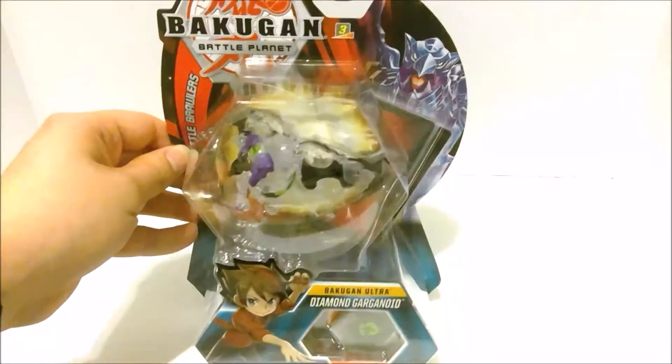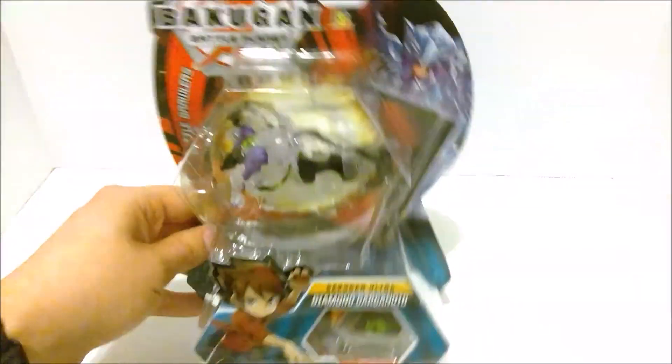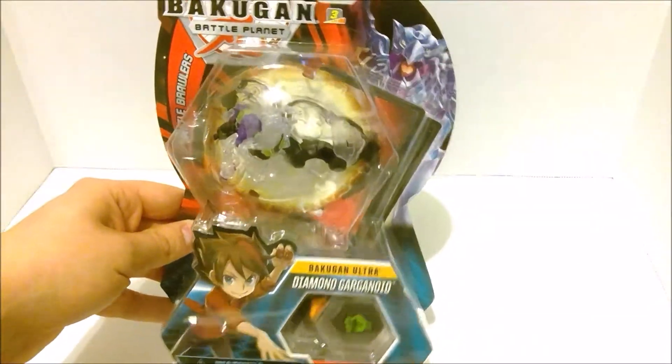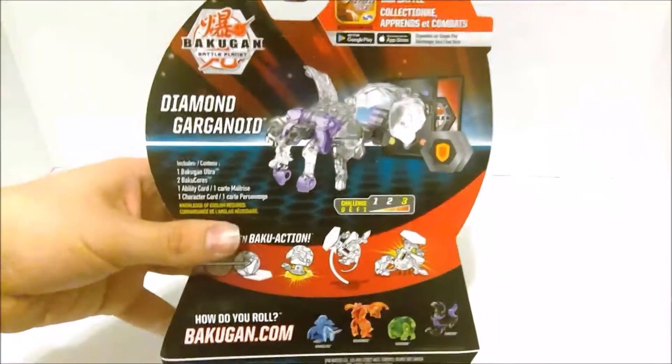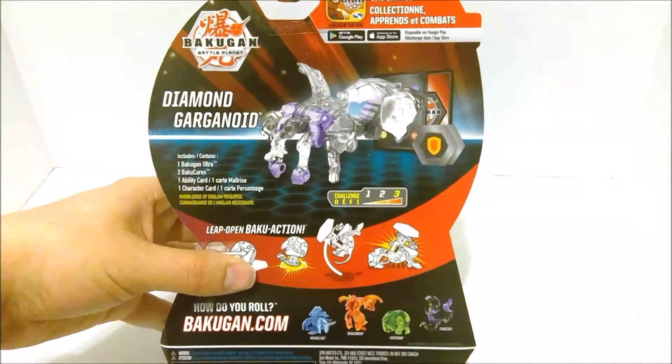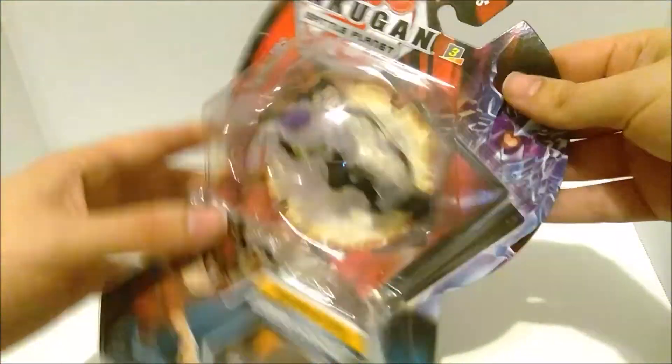This is an old figure. This isn't anything new. This isn't a re-release or anything. This is from months ago. I just haven't opened it yet. This is Darkest Garganoid Ultra Diamond. Like always, character card, ability card, two cores. Nothing crazy here. Let's just get right into it because we know what this guy is.